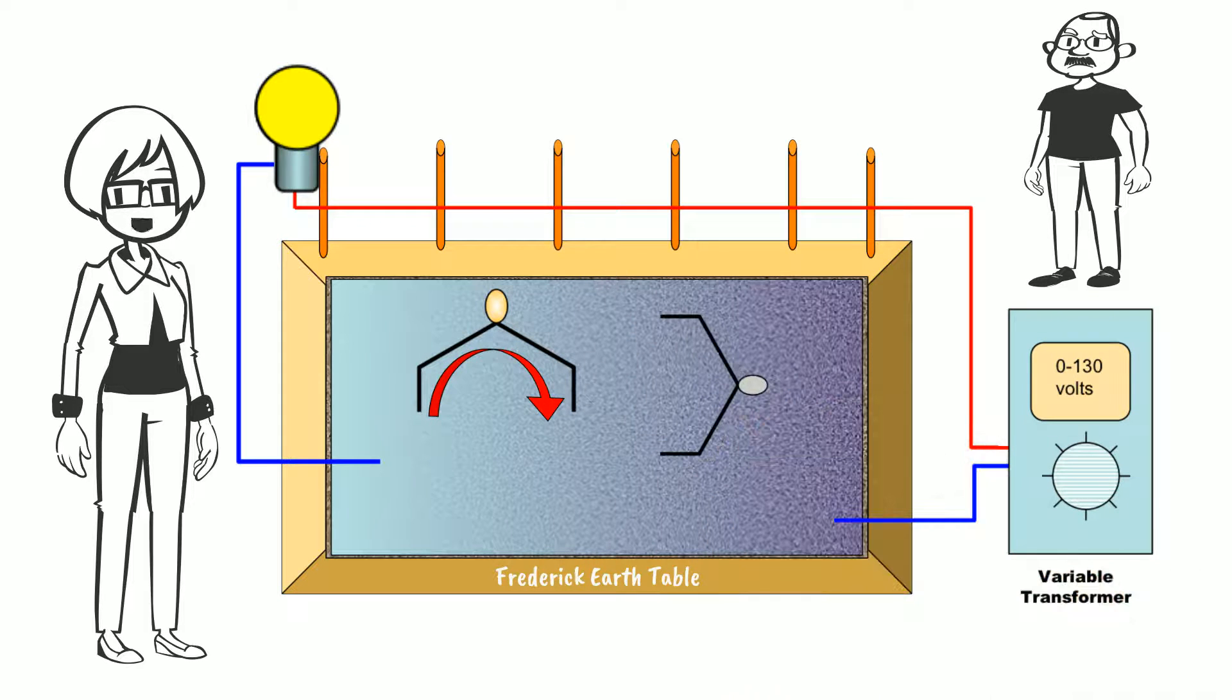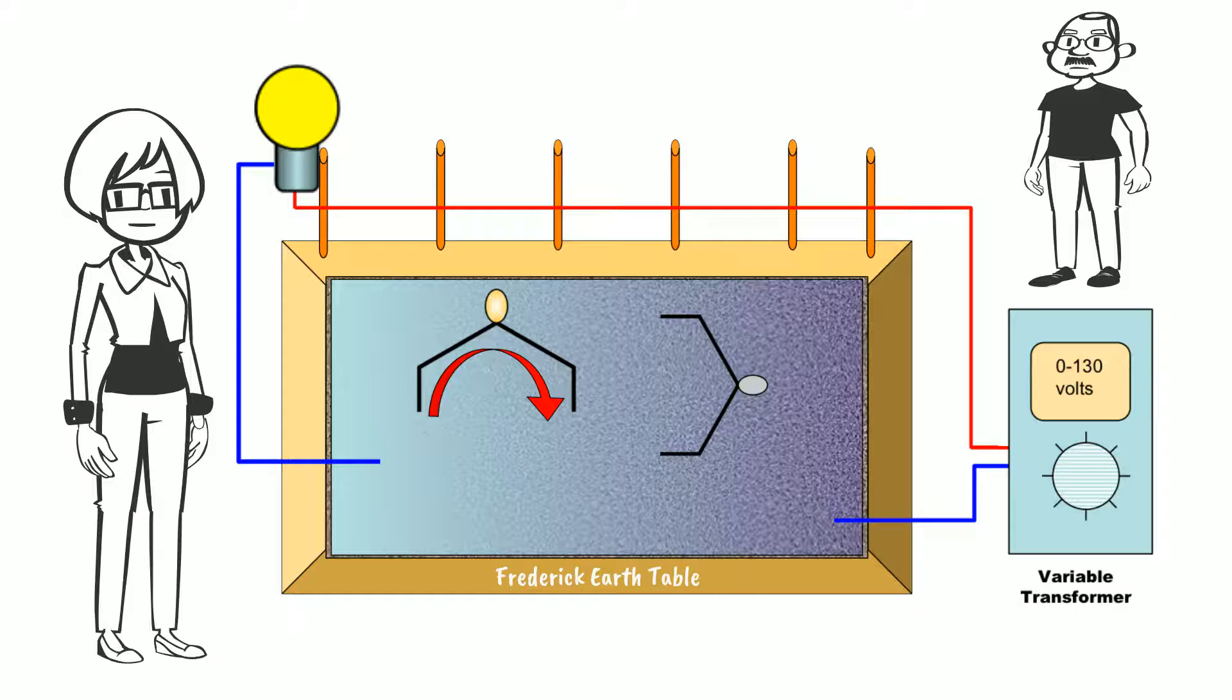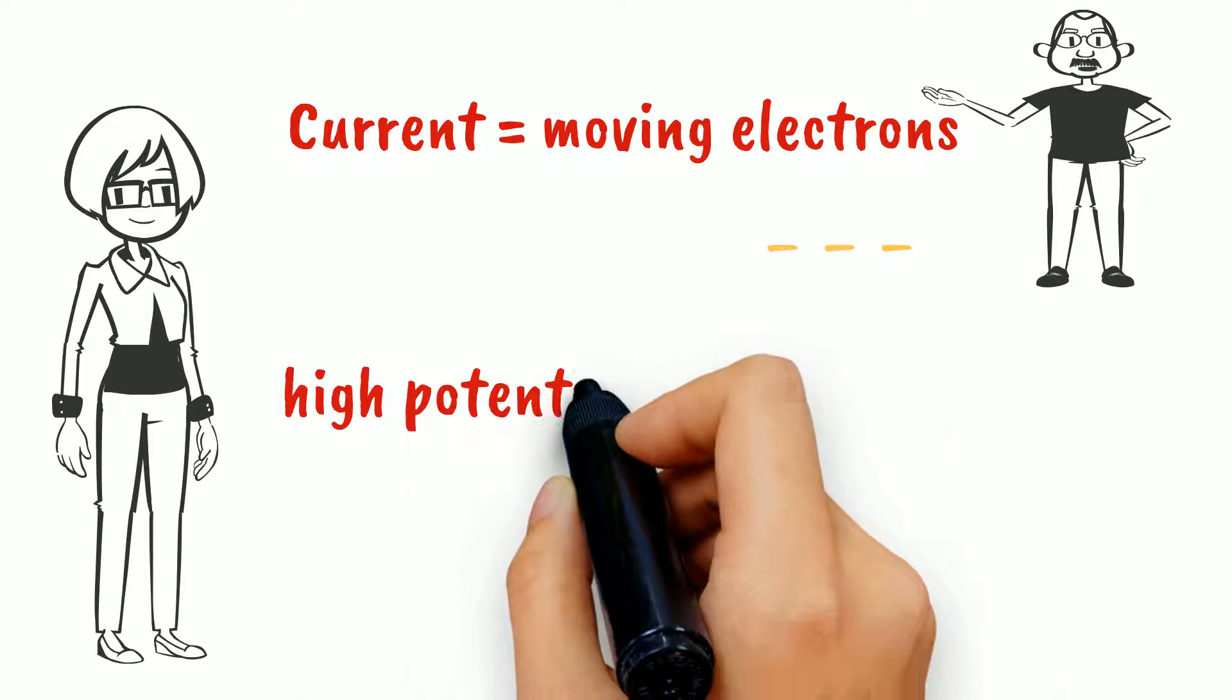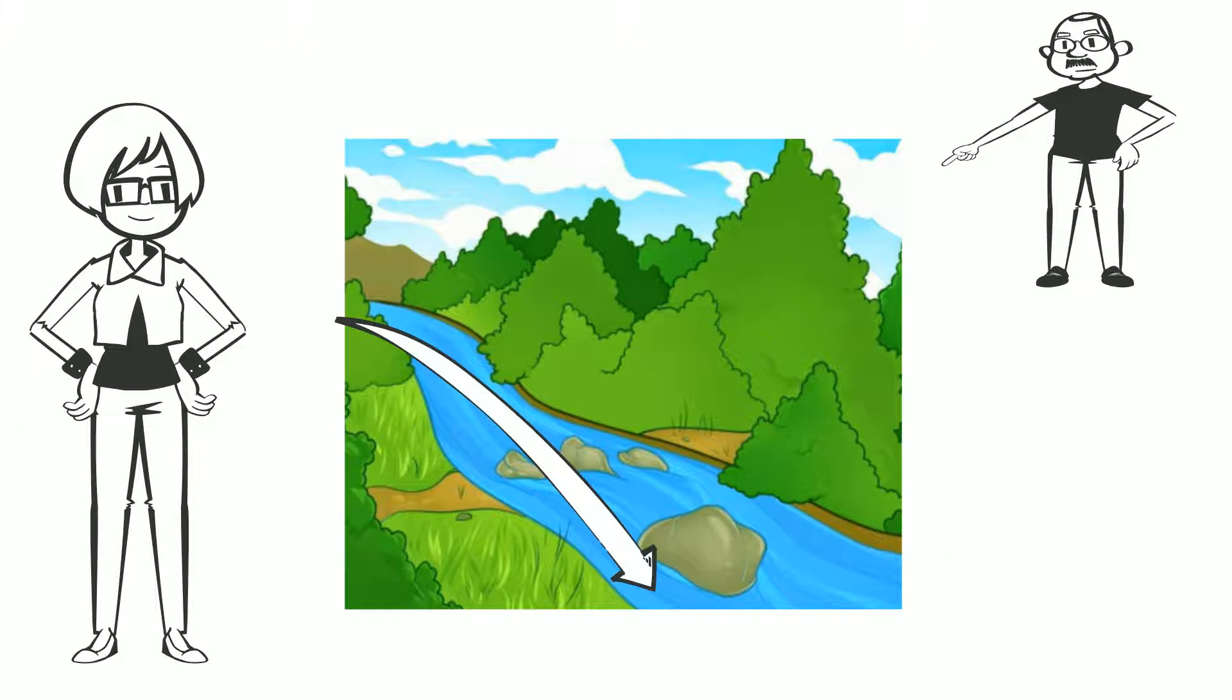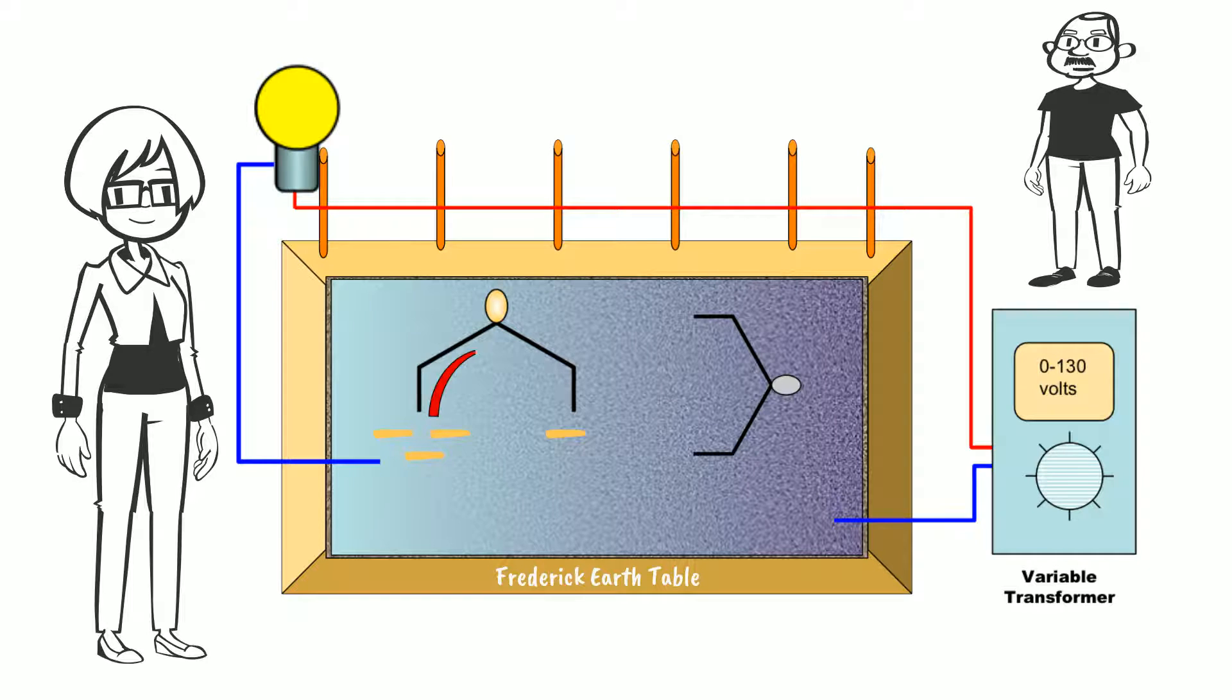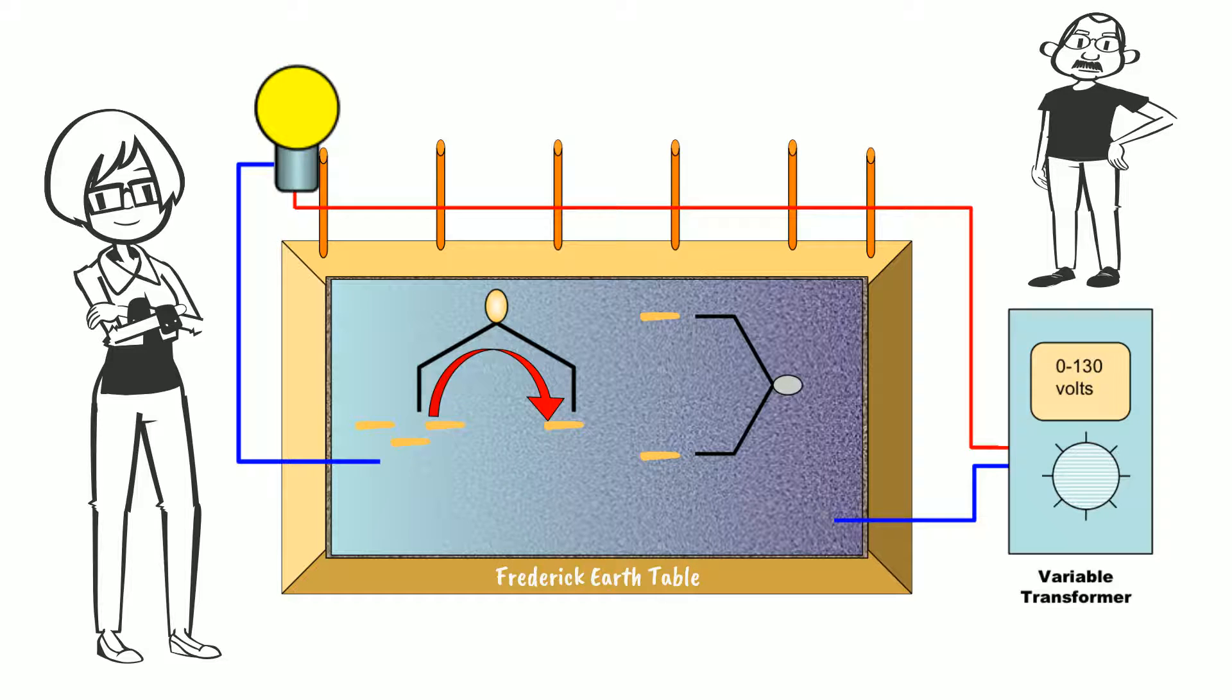However, when the figure was placed perpendicular to the flow of electricity, the light bulb stayed off. Ralph, can you explain this? Remember that current refers to moving electrons. Electrons move from an area of high potential to an area of low potential, just like water flowing downhill. The copper figure on the left has an electron gradient between the two copper feet, so electrons flow from high potential to low potential and the current lights the bulb. The copper figure on the right has both feet at the same potential, so there is no electron flow, no current, and the light remains off.